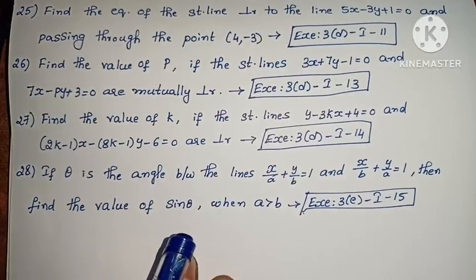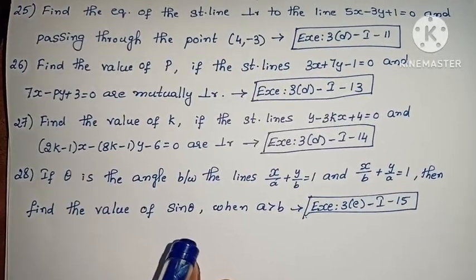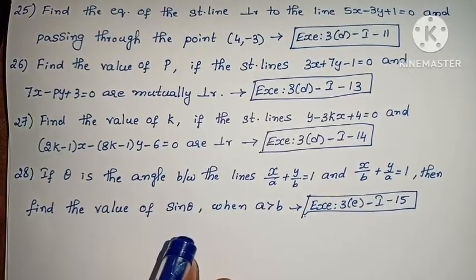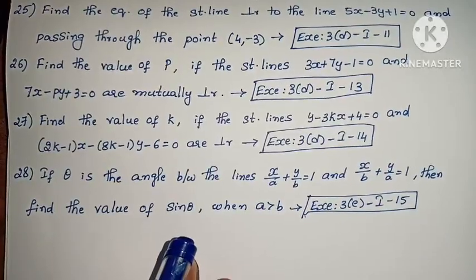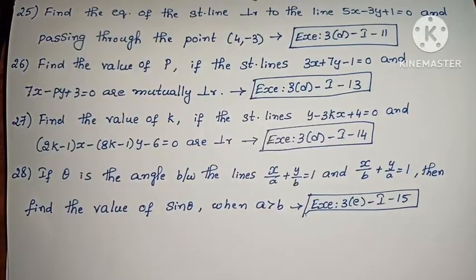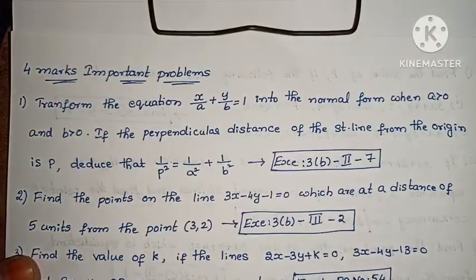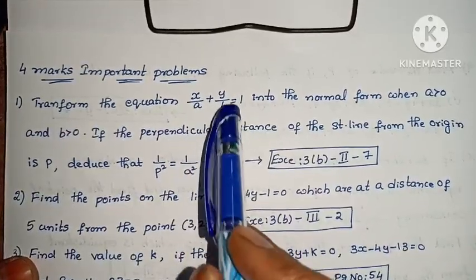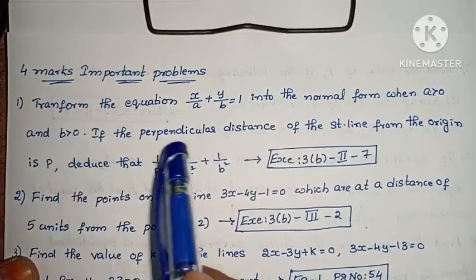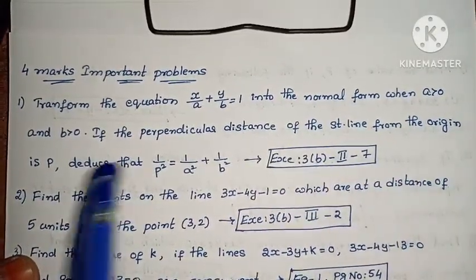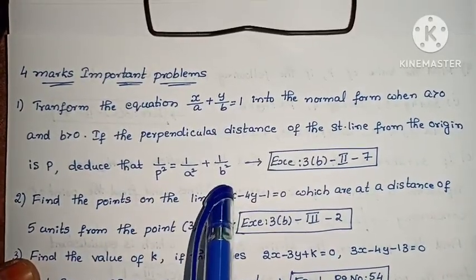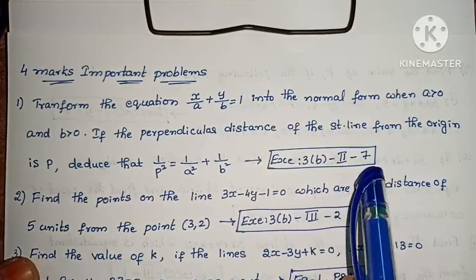Now these are 2 marks problems — small problems. So 2 plus 2 is 4 marks. Now we have 4 marks important problems. First one: transform the equation x/a plus y/b equals to 1 into normal form, when a greater than 0 and b greater than 0. If the perpendicular distance of the straight line from the origin is p, deduce that 1/p² equals to 1/a² plus 1/b².